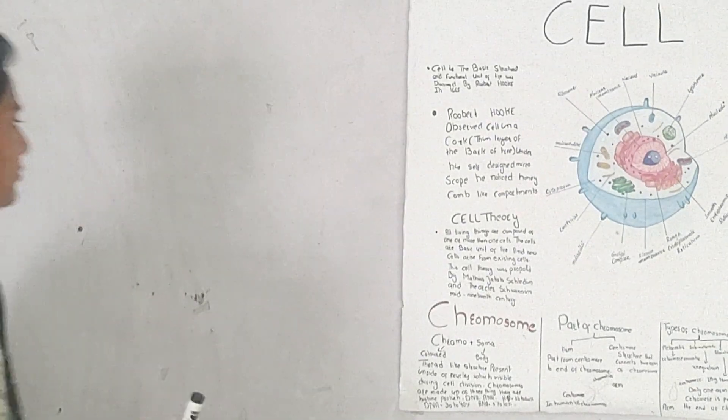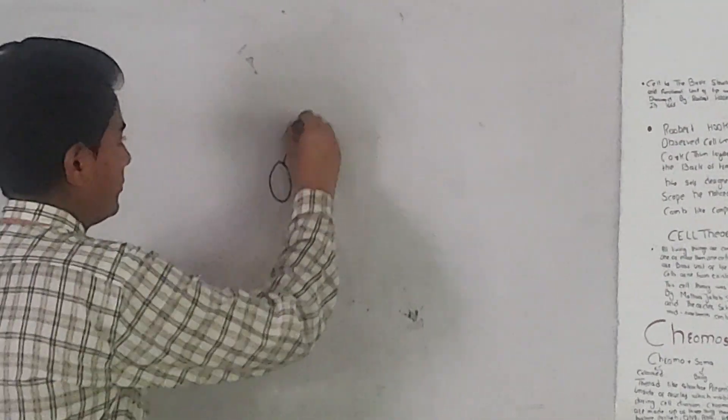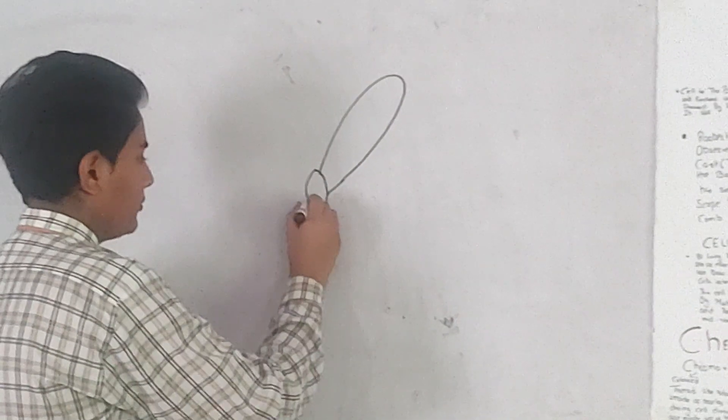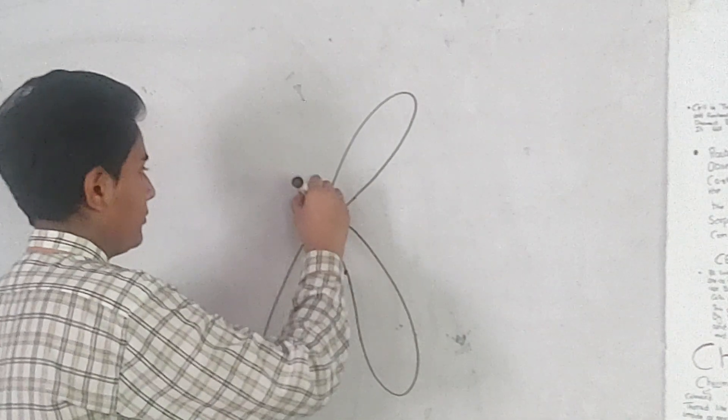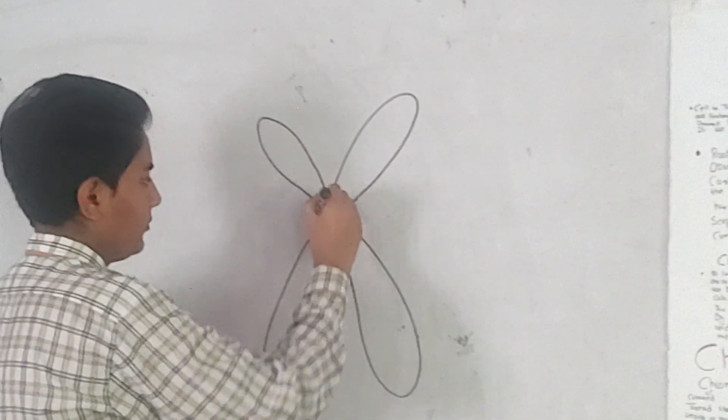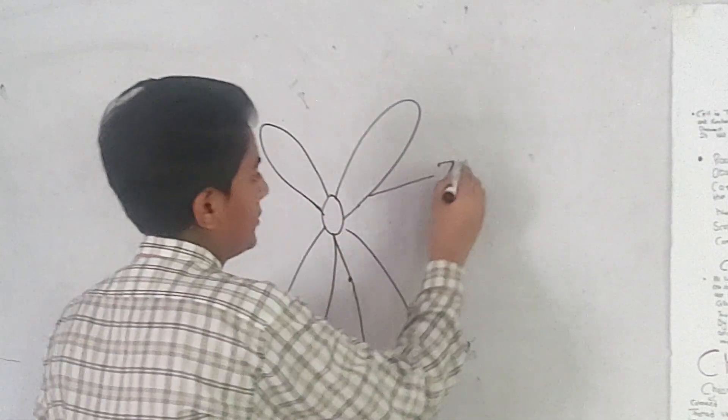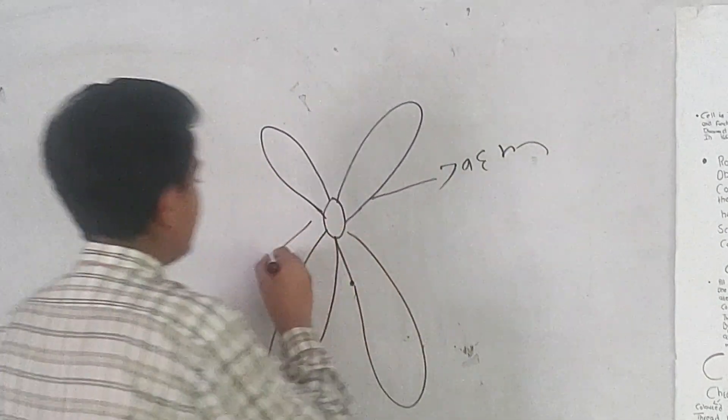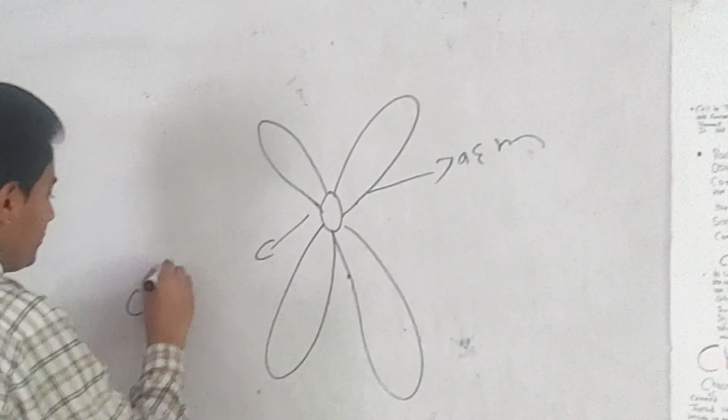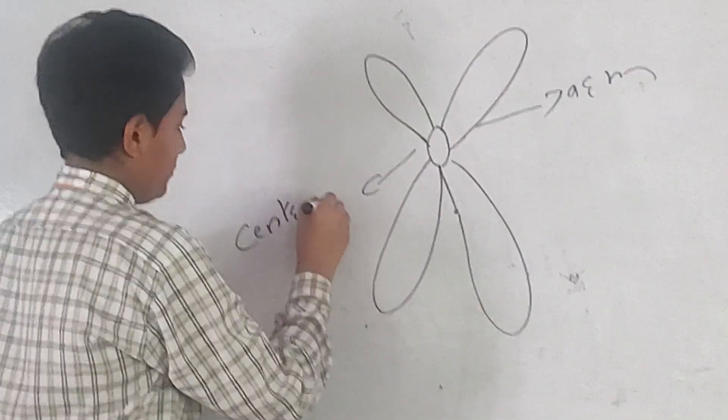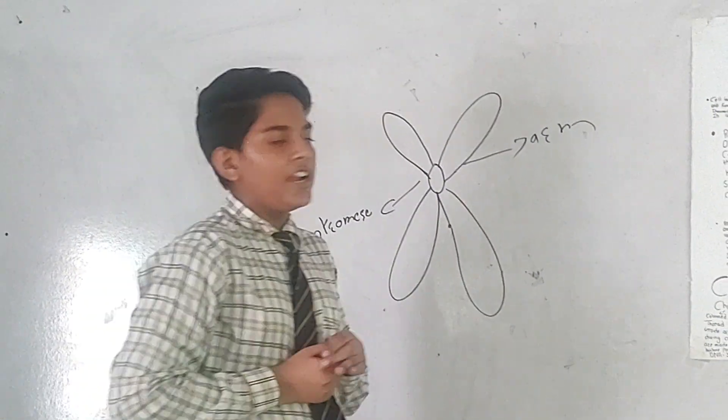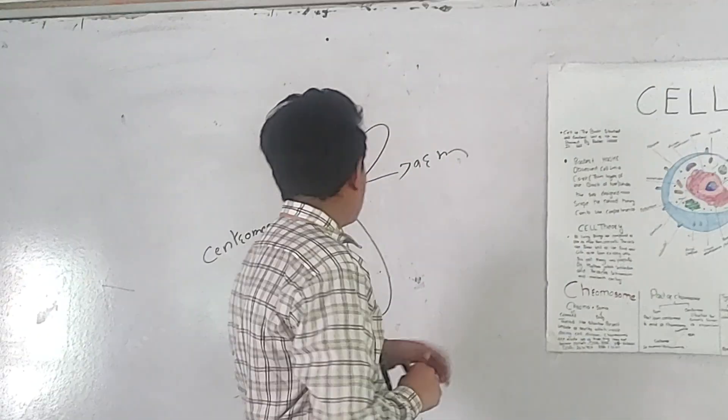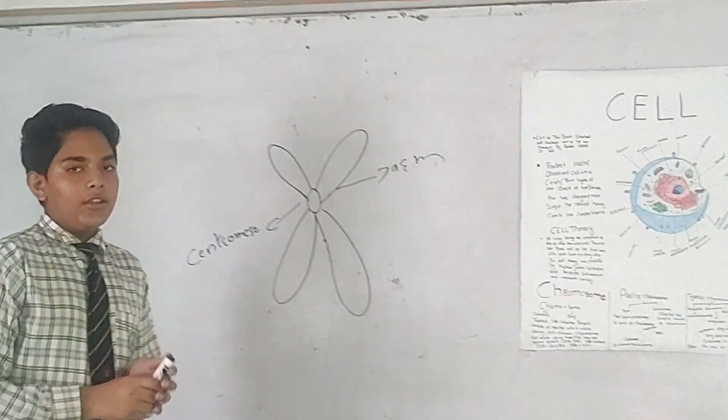Parts of chromosomes: These are arms and this is centromere. The junction of two arms is called centromere.